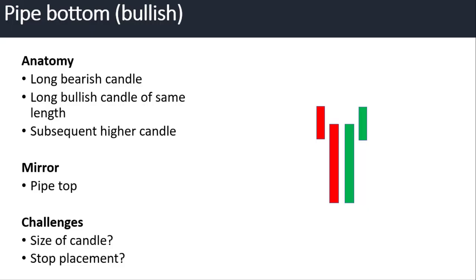Let's give a description of this in terms of its anatomy, focusing on the pipe bottom which is bullish. We invariably have a downtrend which ends in this particular pattern where we get a long bearish candle followed by a long bullish candle of equal length. The emphasis here is that these are long candles. They may or may not have wicks, but subsequently we have a close with a higher bullish candle to confirm the pattern is complete.